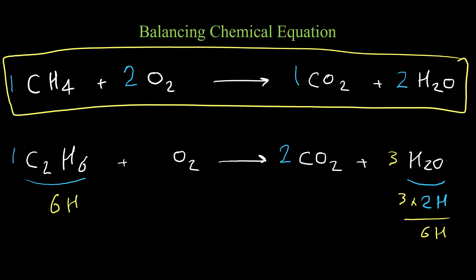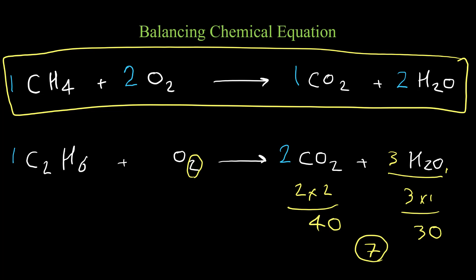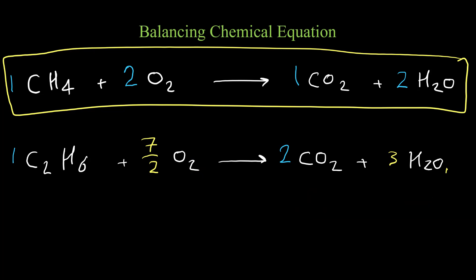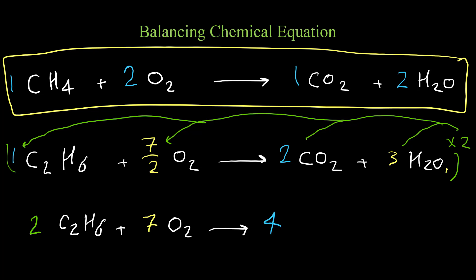Carbon and hydrogen are balanced, so now we balance oxygen. On the right side: two times two is four oxygen from carbon dioxide, and three times one is three oxygen from water, giving seven oxygen total. I need to put seven-over-two in front of O₂, but that is a fractional coefficient, so I multiply the whole equation by two. The final balanced equation is: 2 C₂H₆ + 7 O₂ → 4 CO₂ + 6 H₂O.